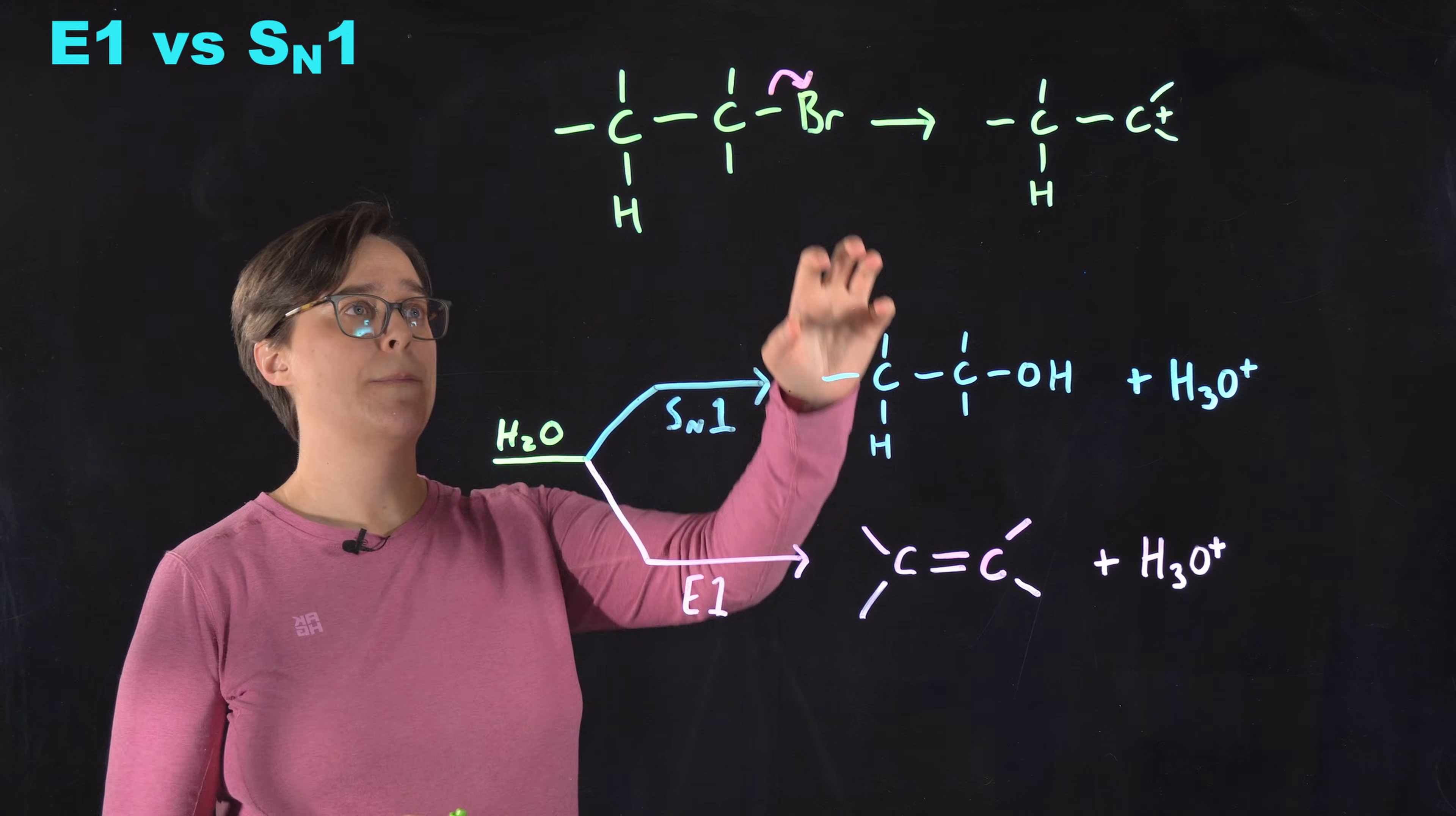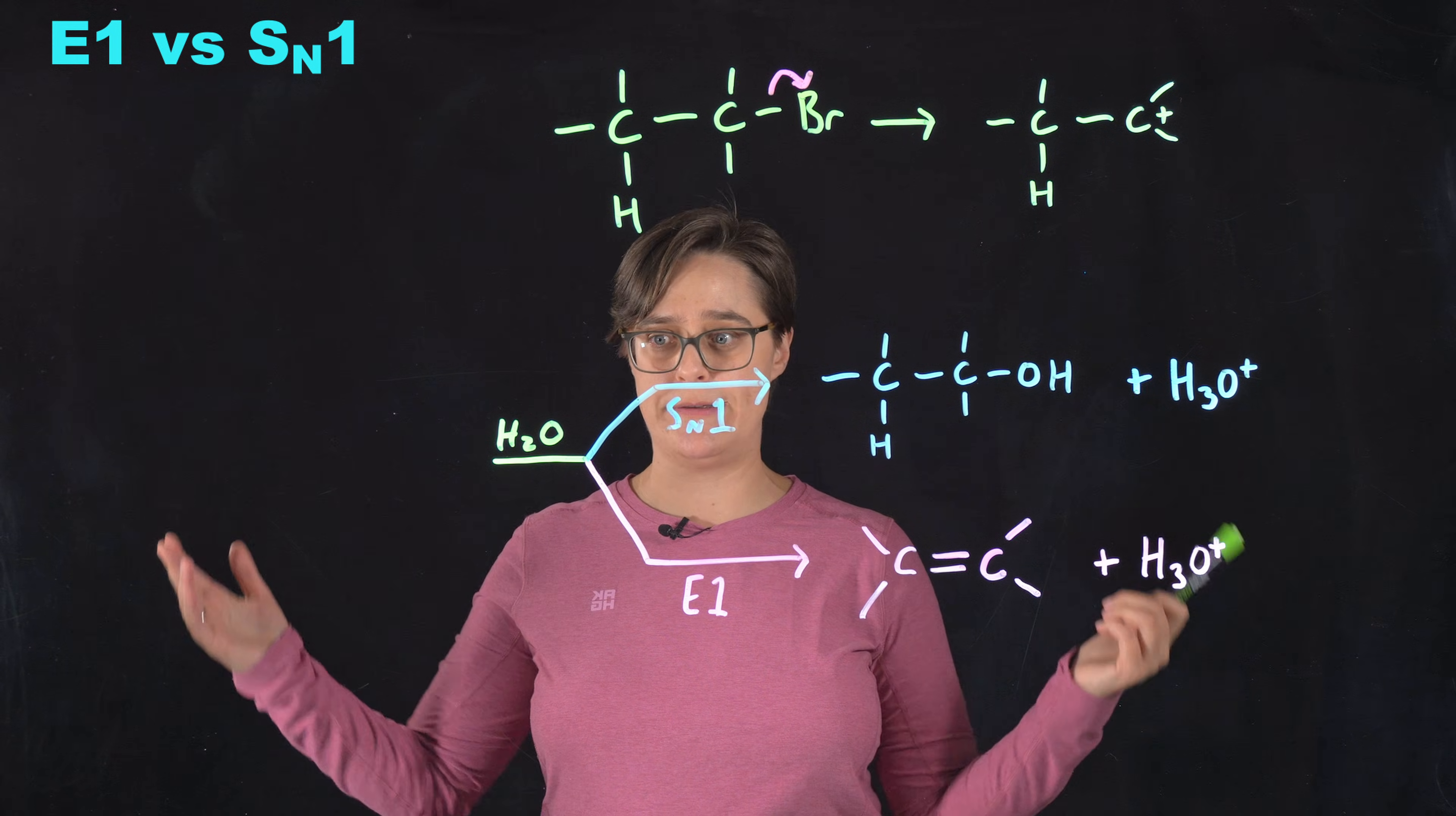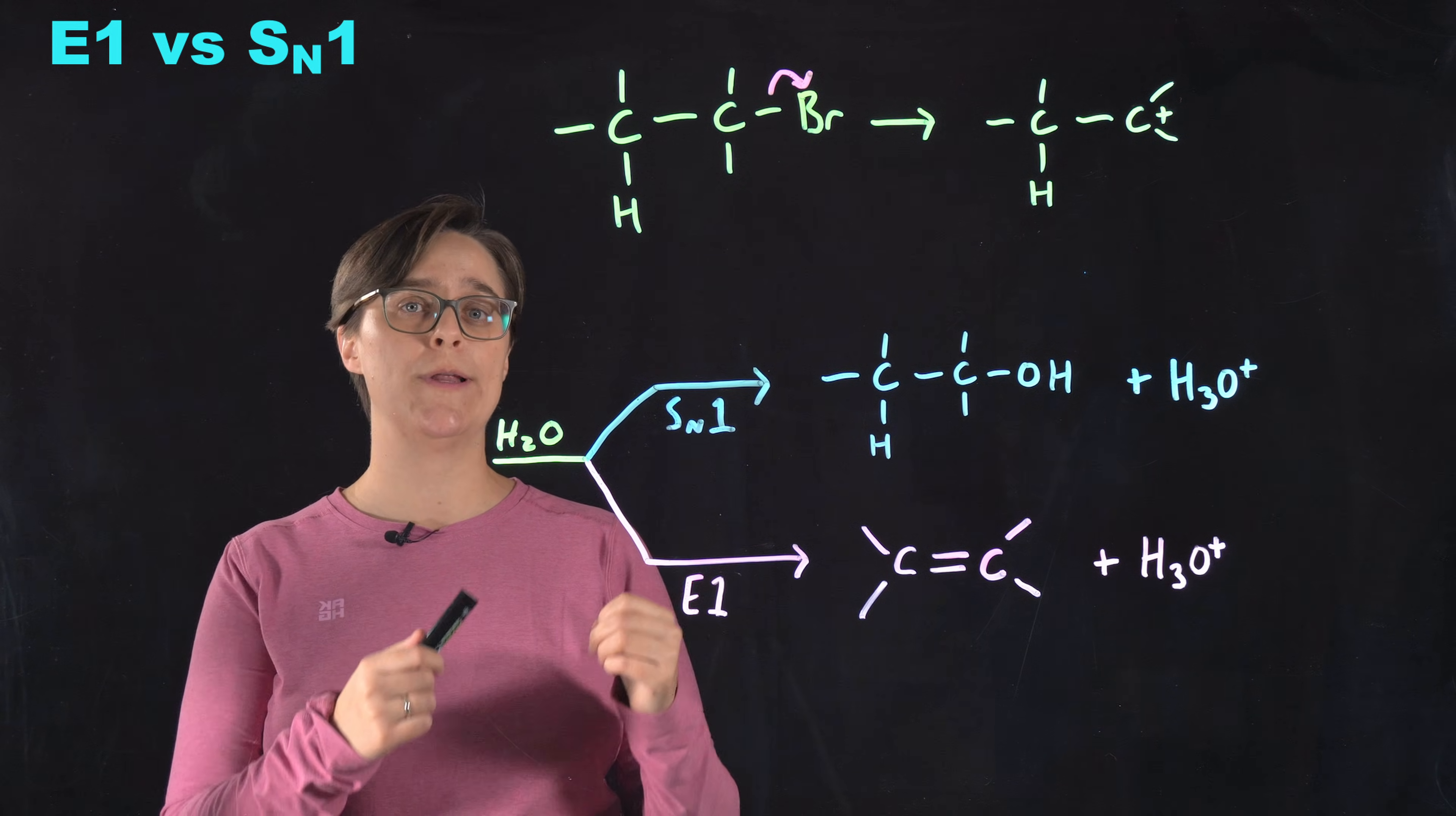So let's look at this reactant. I didn't specify what all is bonded here, but the important thing is that this is something that can form a carbocation with this leaving group leaving. That is the first step of both SN1 and E1 mechanisms. And these mechanisms can deal with the same solvents and bases. It is entirely possible that you will be in a situation where both of these mechanisms can occur at the same time. You can end up with both nucleophilic substitution product and elimination product.